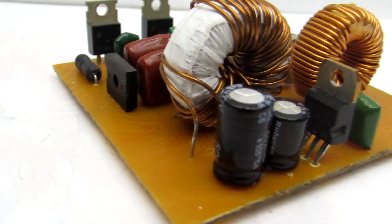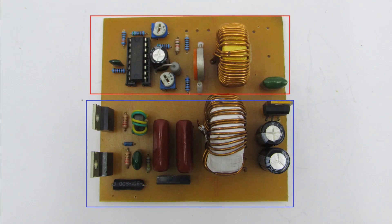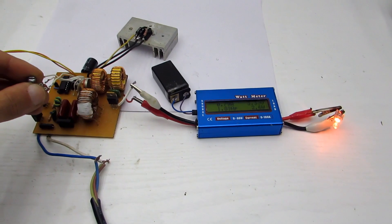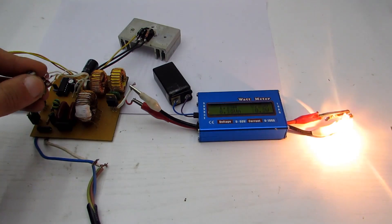So, let's begin! Charger consists of two parts, a power unit and a stabilizer. The stabilizer is based on the popular TL494 PWM controller, will provide an output voltage from 2 to 20 volts.